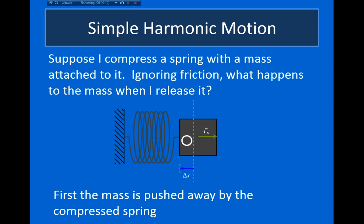In this figure down here, I show a mass that's attached to a spring, and this spring has been compressed by pushing this mass to the left. So in this case, delta x points to the left. Now, recall from the previous video, the force exerted by the spring always points in the opposite direction as delta x. So here, the spring has been compressed by pushing it to the left, so the spring force will point to the right.